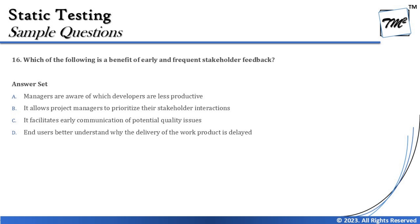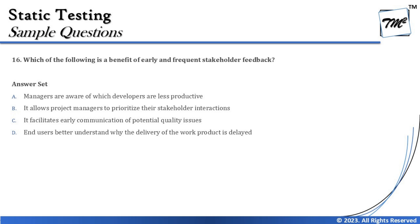Option A says 'managers are aware of which developers are less productive' — this is not the context at all. Early and frequent feedback is never about developers or testers; it's about aligning to customer expectations, so A can be ruled out. Option B says 'it allows project managers to prioritize their stakeholder interaction.' While prioritizing stakeholder interaction is an input, the real context of early and frequent feedback is presenting what you've built to the business for acknowledgment.